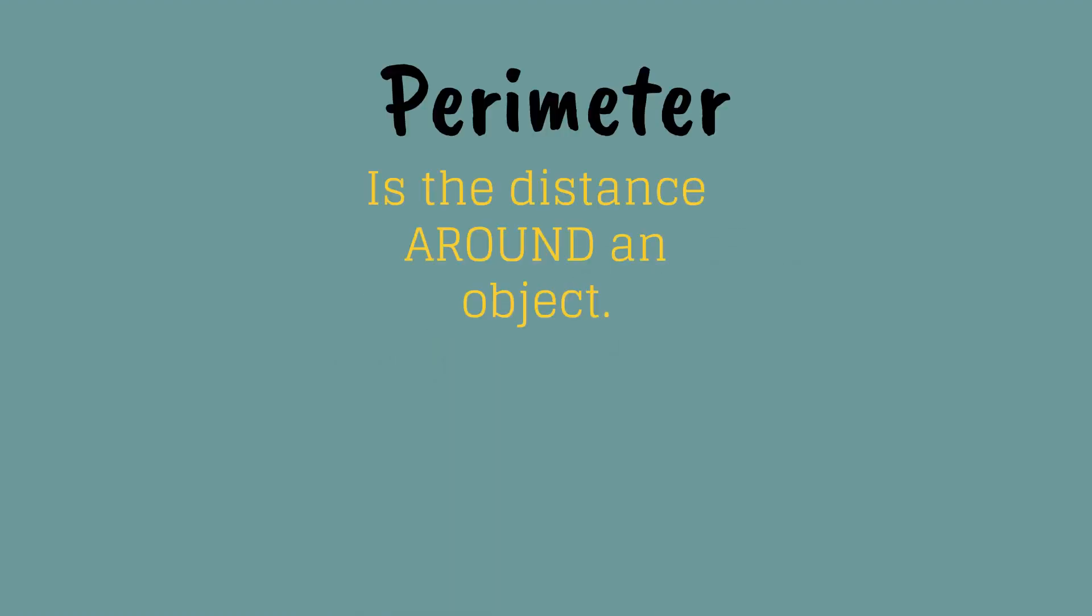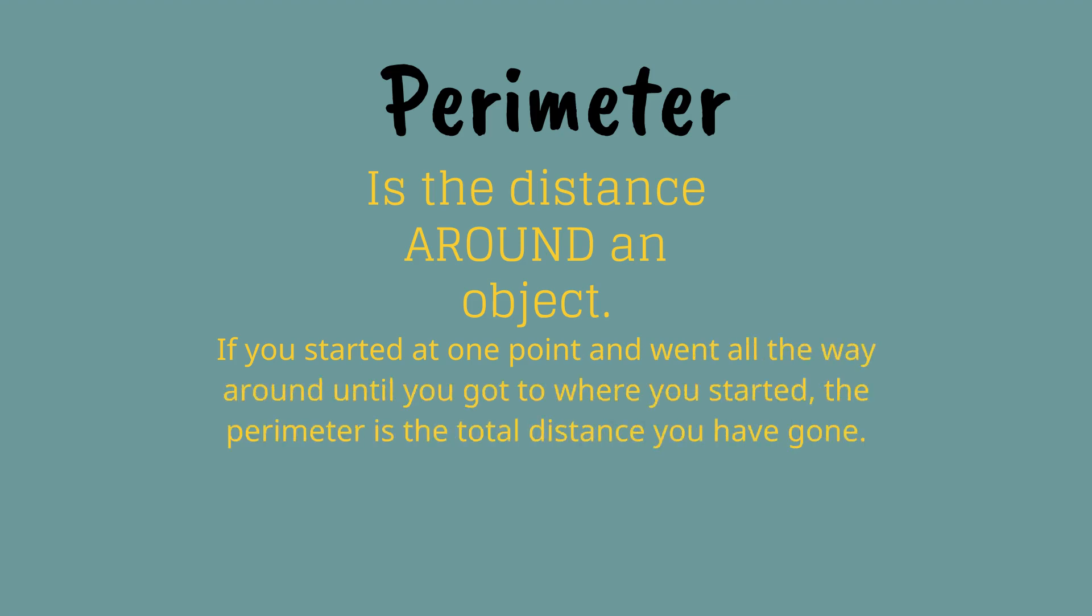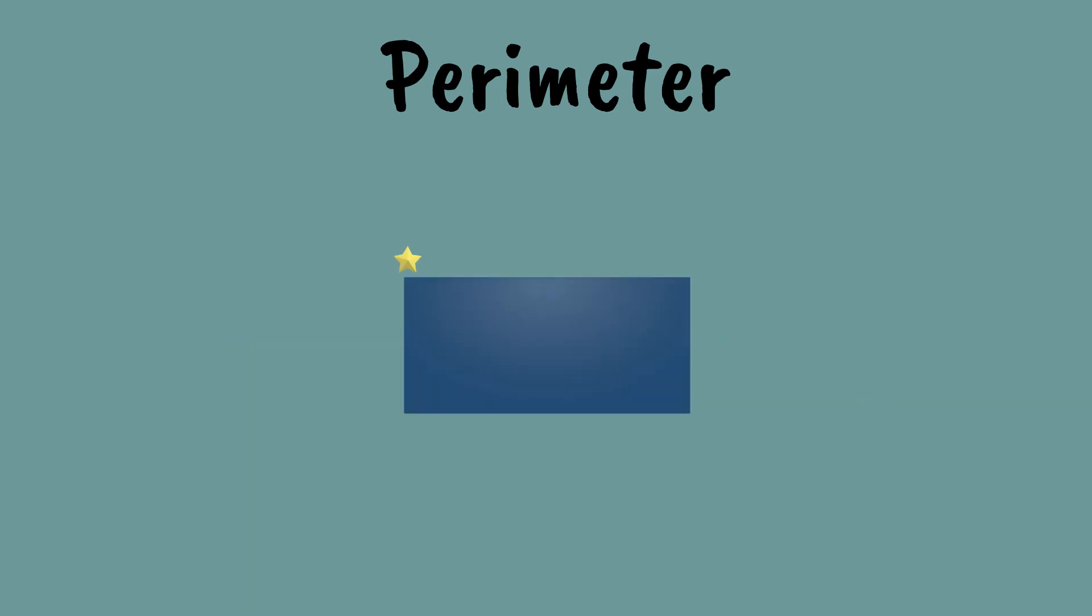Perimeter is the distance around an object. If you started at one point and went all the way around until you got to where you started, the perimeter is the total distance you have gone. Say you are this star right here and you go along the longer side of the rectangle like this, down the next side, back up along the longer side, and up again. You have traveled the perimeter of the rectangle.